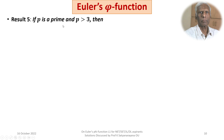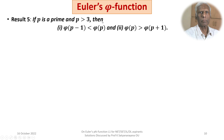If p is a prime number greater than 3, we have two results to prove. The first result is phi(p − 1) < phi(p), and the second result is phi(p) > phi(p + 1).